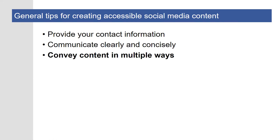Your content is more likely to be accessible if it's conveyed in multiple ways. Don't just use images, color, video, or audio — and don't just use text. Use a combination of those approaches. Share important information across all of your social media channels, modifying the content and its presentation so it's appropriate to the platform and its audience. For example, the hashtags you'd include with an Instagram post may not make sense on Facebook and may create visual clutter.